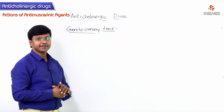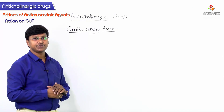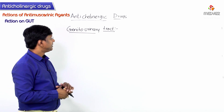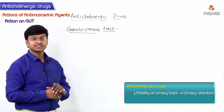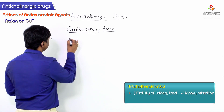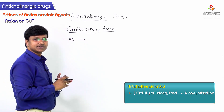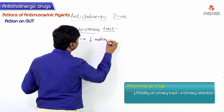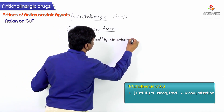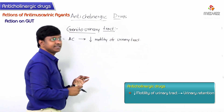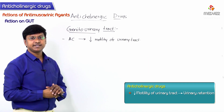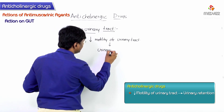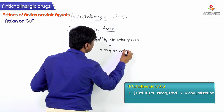Let me discuss the effect of anticholinergic drugs on the genitourinary tract. These drugs will decrease the motility of the urinary tract. Because they decrease the motility of the urinary tract, they will cause urinary retention.